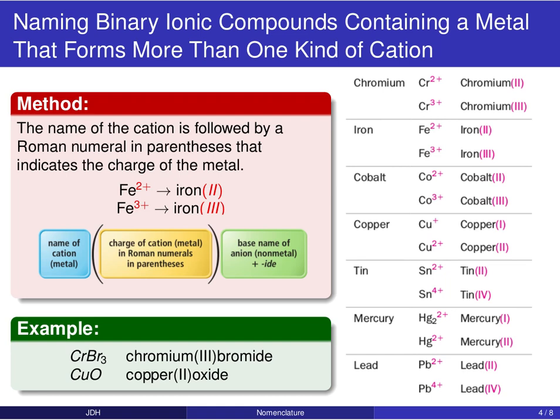Things get a little bit more complicated if you're dealing with metals that form more than one type of cation. This is something that often happens with our transition metal elements — those d-block elements right there in the center of the periodic table.